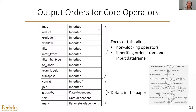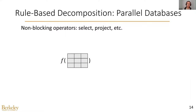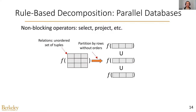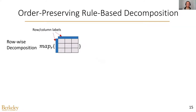To do this, we first define the output orders for core operators. Some of them will inherit the order from the input data frames, and some are data or parameter dependent. In this talk, I will focus on the non-blocking operators that inherit orders from one input data frame. Let's first revisit how databases parallelize non-blocking operators. It takes an ordered set of tuples as input and partitions it by rows without considering orders. After applying each operator to each partition, a union function is adopted to union the results. This approach does not apply to data frame systems because we need to consider orders and have flexible ways of applying the operators. Therefore, we propose order-preserving row-based decomposition.